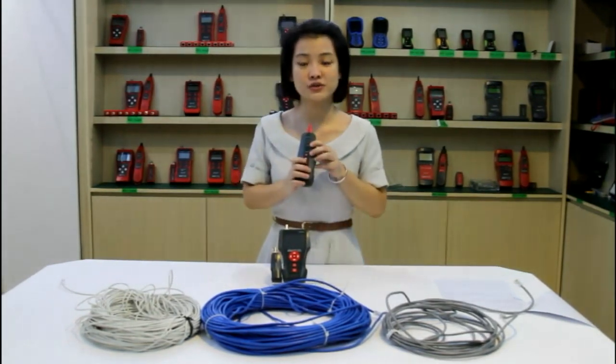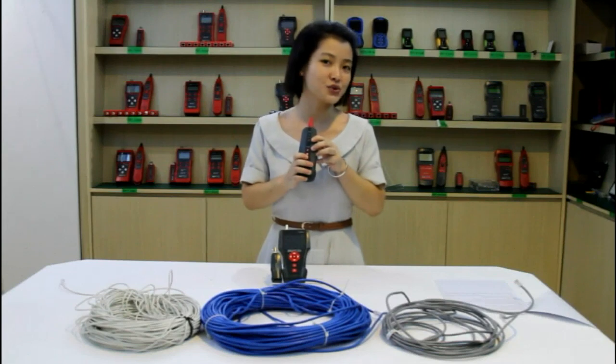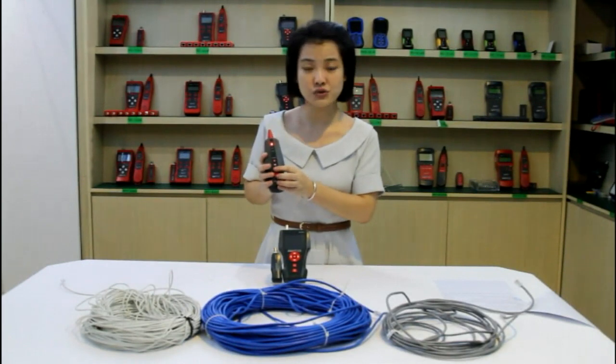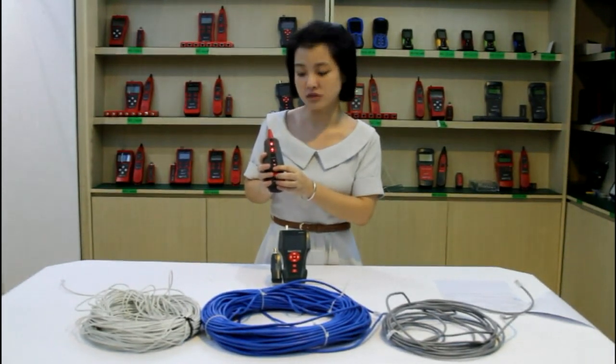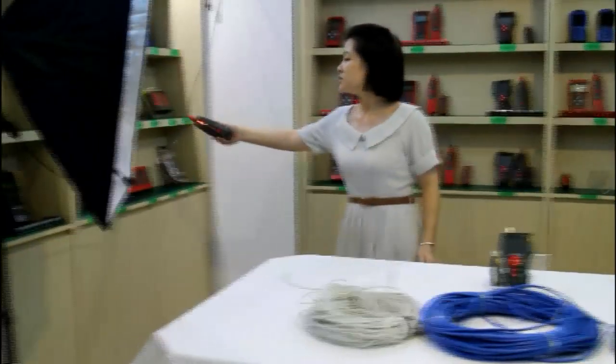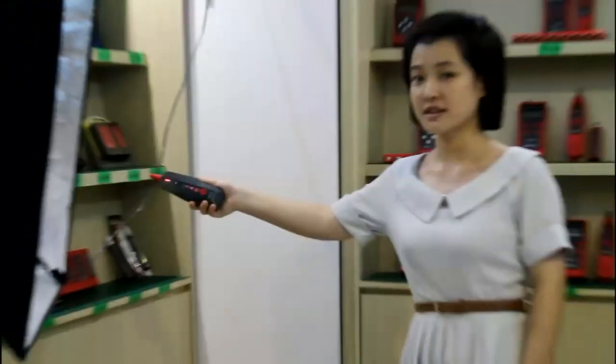Here I'd like to introduce our receiver as a voltage detector. Turn on the device and choose the voltage detector mode. Use the receiver to get close to the electric cable, you will hear a sound. That means this is an electric source here.